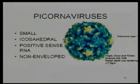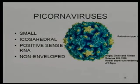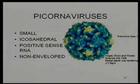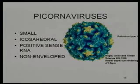Poliovirus belongs to the picornavirus family, as do rhinoviruses (the common cold viruses) and hepatitis A virus. Pico means small — these are pretty small particles, around 20 nanometers. They are icosahedral, naked nucleocapsids with positive sense RNA, and they're non-enveloped. These represent the soccer ball type model — here are the pentons with five-fold symmetry, and on the surface of each of the 20 triangular faces is a subunit capsomer, each actually made up of three proteins with six neighbors: three pentons and three other hexons.